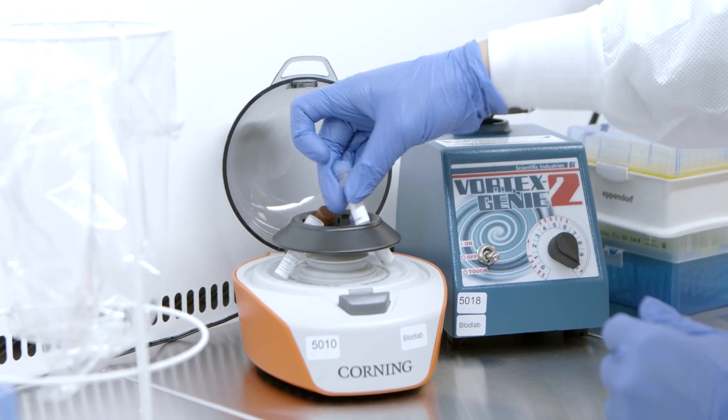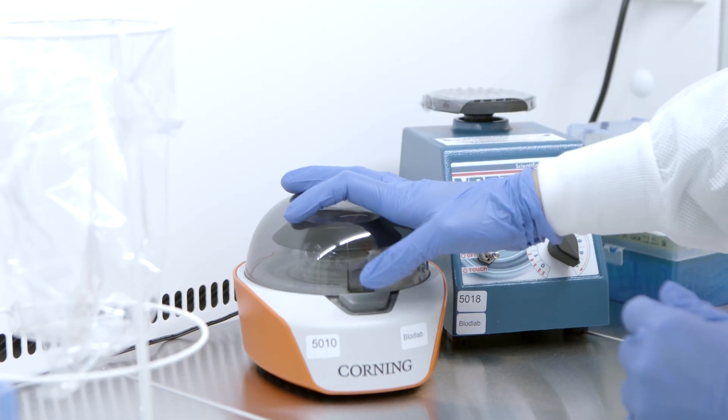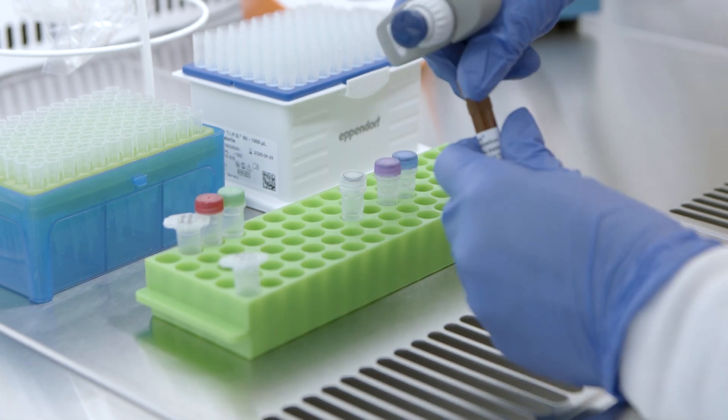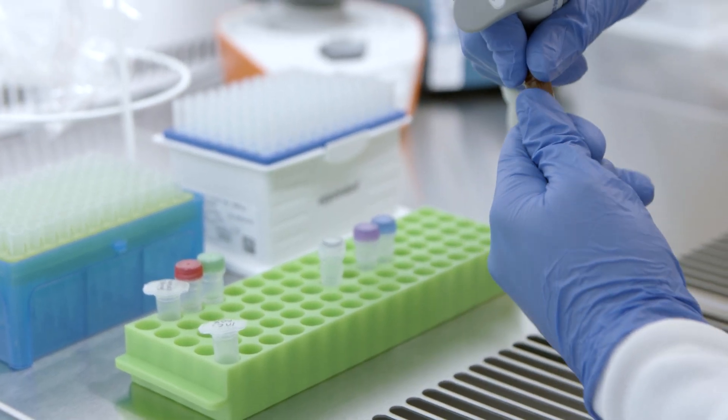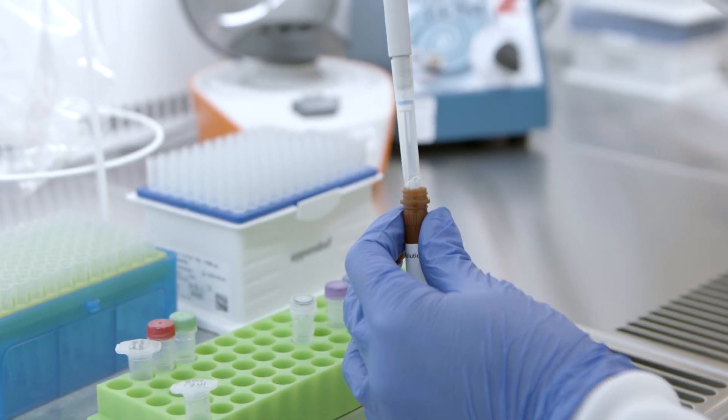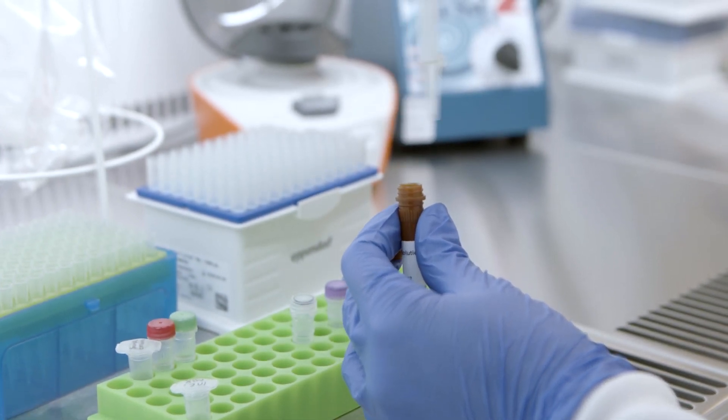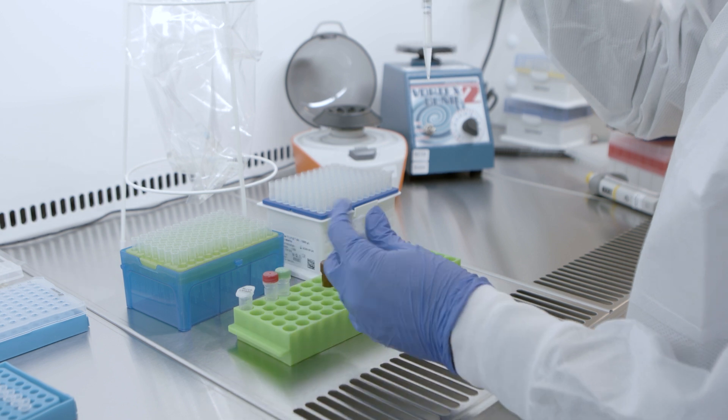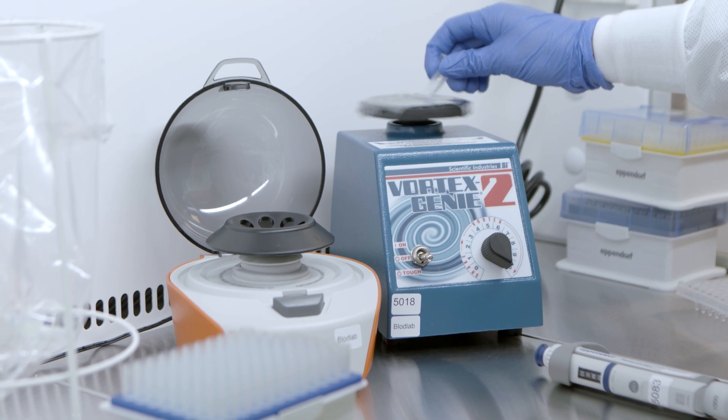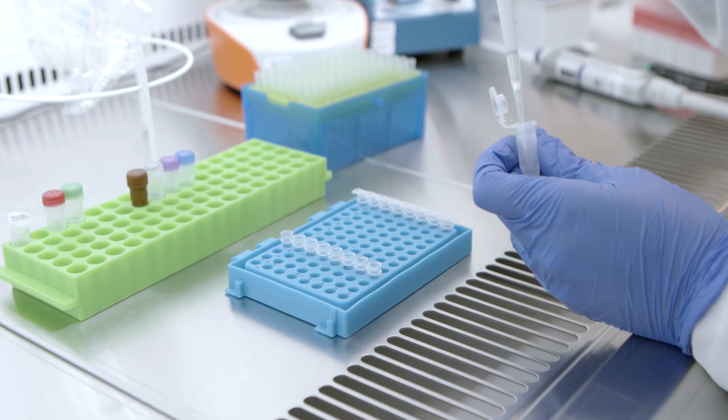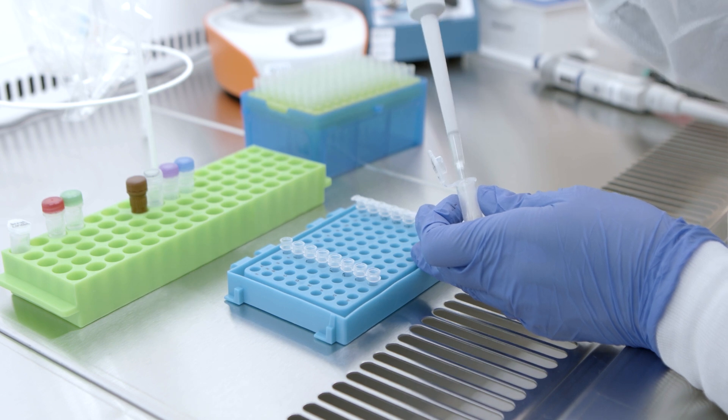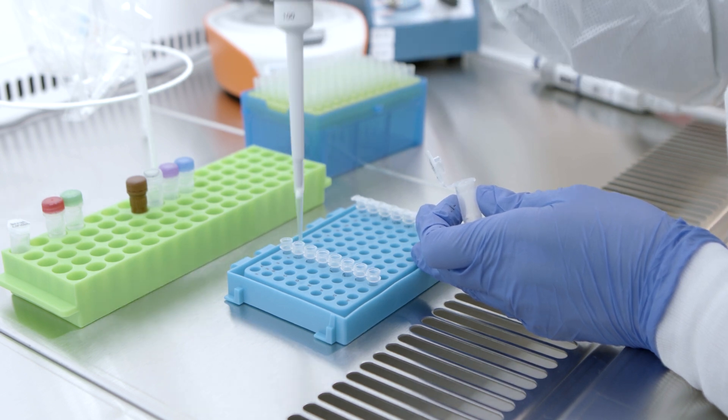Vortex and spin down all reagents before making the incubation mix. Prepare the incubation mix by combining the incubation solution, incubation stabilizer, and A and B probes in a microcentrifuge tube, according to the volumes mentioned in the O-Link user manual. Vortex and spin down the incubation mix. And transfer 47 microliters into each well of a new 8-well PCR strip labeled as incubation mix.